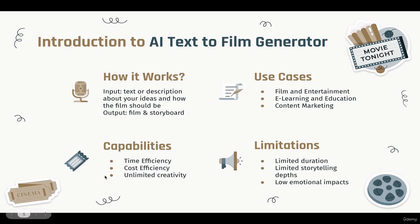The third capability is unlimited creativity: AI text-to-film generators bring a unique dimension of creativity to filmmaking. They can produce imaginative scenes, visuals, and special effects that might be challenging to achieve manually. AI's ability to explore vast creative possibilities can inspire filmmakers to think outside the box and experiment with unconventional storytelling techniques. Now let's talk about the limitations — a quick reminder that this technology is still in its early development stage, so it is not perfect.